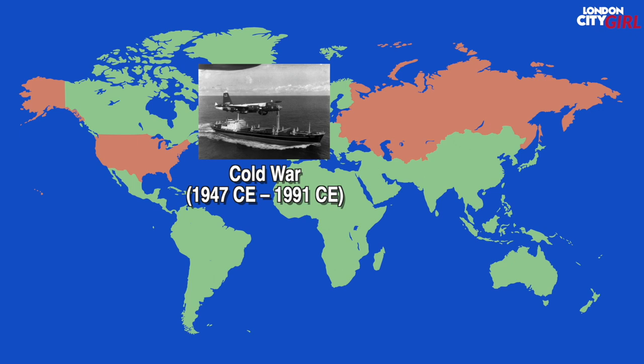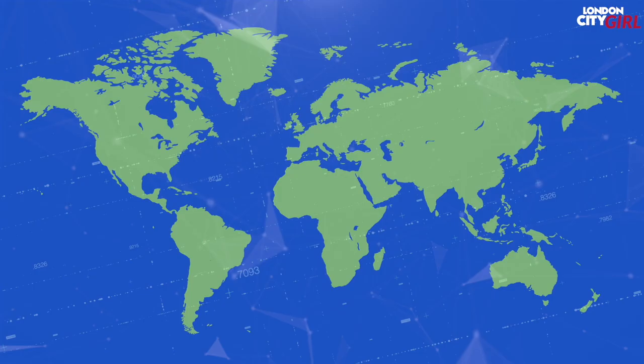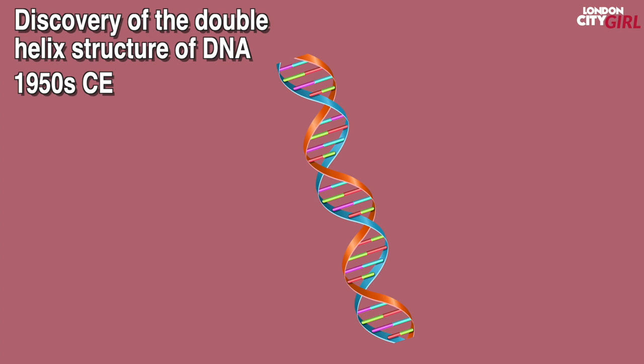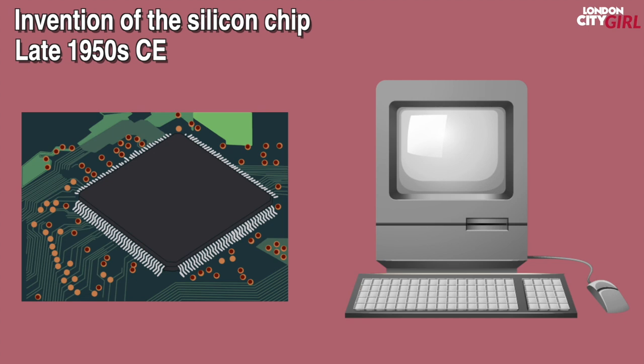In 1949 CE communist China, known as the People's Republic of China, was founded. In this post-war period the speed of change, especially in science and technology, accelerated and the world became more and more connected. In the 1950s the study of DNA and genetics revolutionised biomedical science. Later in that same decade the invention of the silicon chip heralded the computer age.